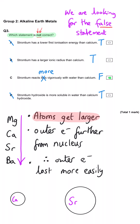As we go down the group, the metals get more reactive as they lose their outer electron more easily. This is because there are extra energy levels shielding the nuclear attraction, and the outer electron is also further from the nucleus, so calcium is oxidised less easily than strontium.